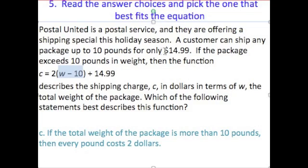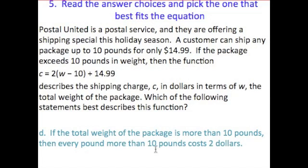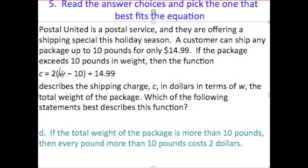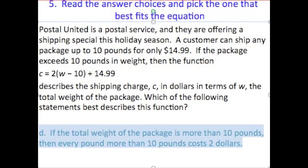So the first 10 pounds only cost us $14.99. Choice D: if the total weight of the package is more than 10 pounds, then every pound more than 10 pounds costs $2. There we go — 2 times the weight of the package minus 10, so every pound over 10 pounds. If we put 11 into this equation, we'd be charged $2 just for that one pound: 11 minus 10 is 1, times 2 is $2. D is the best answer because every other answer had something wrong with it, even though it doesn't mention the $14.99.